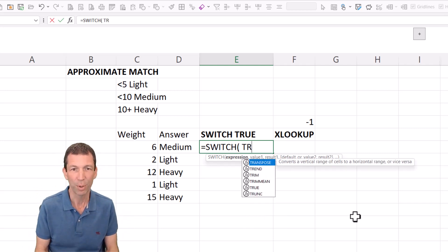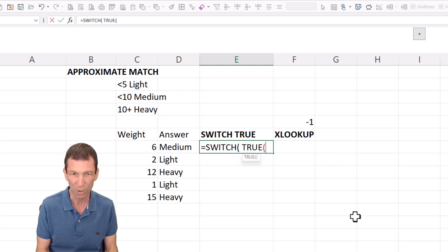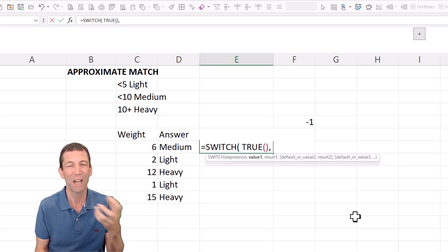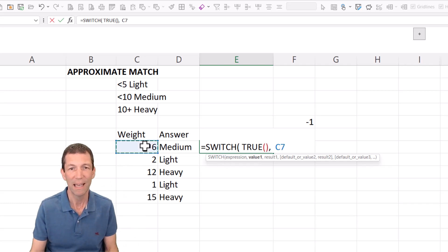So switch true which basically says look evaluate whichever of the following things is true. So you can say okay is this the C7 less than 5? If it is then light.